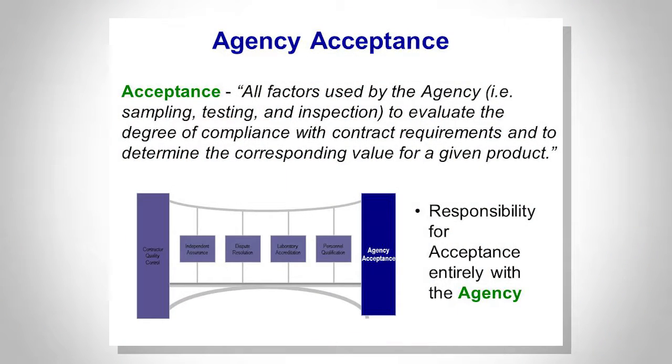As far as agency acceptance, this is for the state agency — that's you all. It covers all factors used by an agency to evaluate the degree of compliance with contract requirements for the product. There needs to be a firewall between the contractor's quality control people, staff, testing, and calibrated equipment, and your staff. Acceptance for the product is entirely up to the agency. The contractor can supply information, but you still have the final call — similar to environmental work, where a contractor can provide information or a study, but you need to validate it and formally accept it.